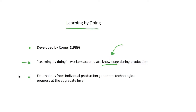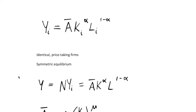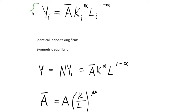So we have an endogenous growth model, and we'll see why this becomes the AK model as I start to derive this learning by doing model. We begin with an individual firm's production function: the output of firm i is given by y_i, and they have a production function which depends on a productivity or technology parameter A-bar. It also depends on their inputs to production — capital and labor, indexed by i — and we assume we have lots of identical price-taking firms paying factors their marginal products.